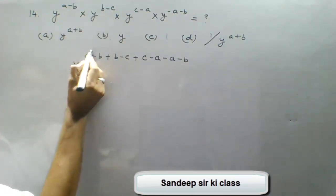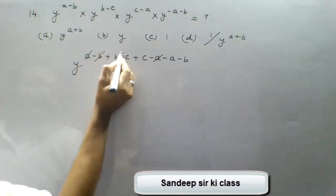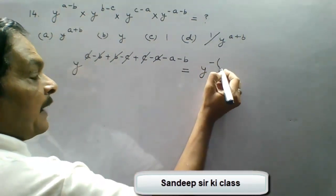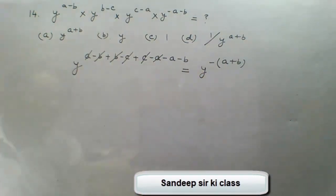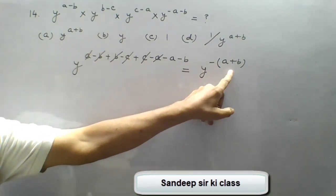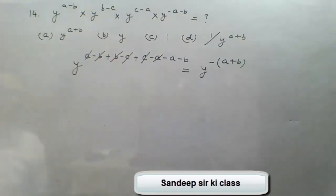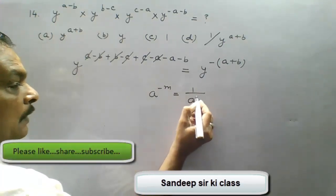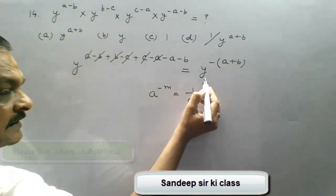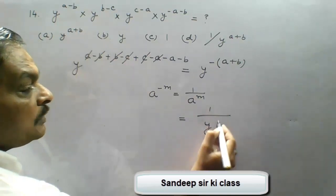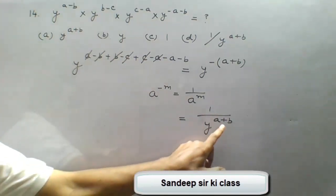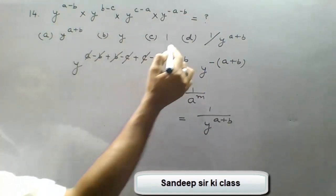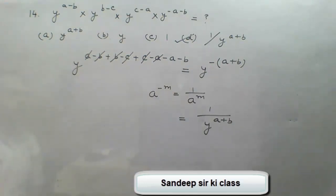Simplifying the powers: a cancels with −a, +b and −b cancel, −c and +c cancel, leaving −a−b. Taking −1 common, we get y to the power −(a+b). Now using the rule that a to the power −m equals 1 upon a to the power m, this becomes 1 upon y to the power (a+b). So option D is correct — the value is 1 upon y to the power (a+b).